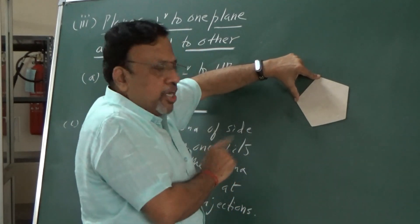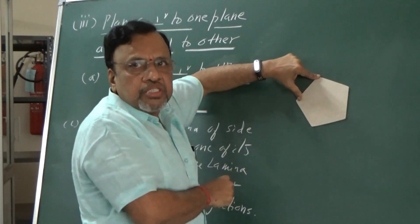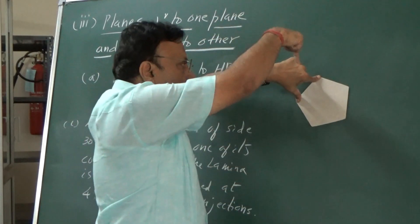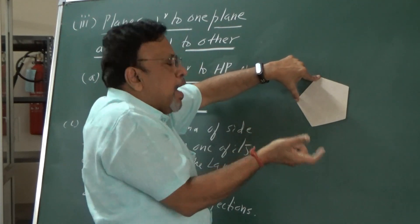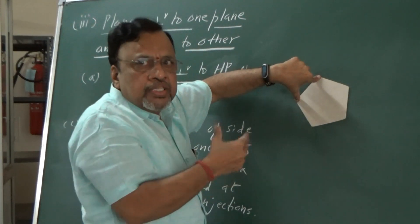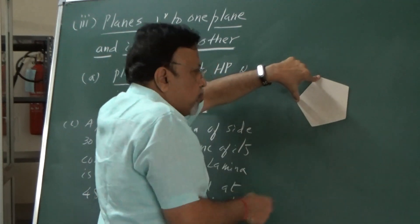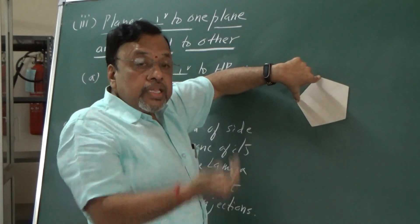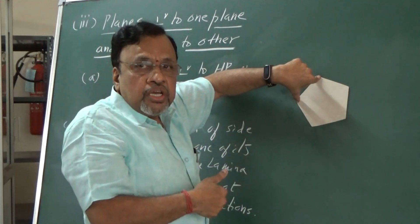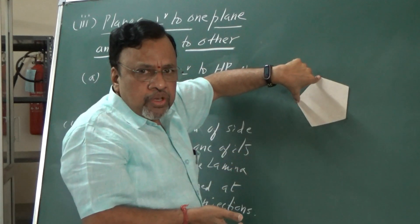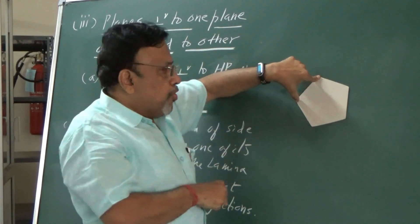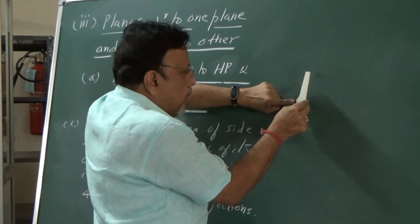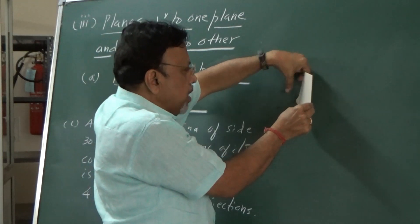This is my initial position. I will draw the figure like this — this is my front view. Now, since I want this corner to rest on VP, I am considering the entire lamina in VP itself. So in the top view, this lamina will be on the XY line. That is my initial position. In the next stage, I need to show the inclination. Since the lamina is seen as a line in the top view, I need to redraw the top view by rotating the line so that the lamina is inclined at 45 degrees to VP.